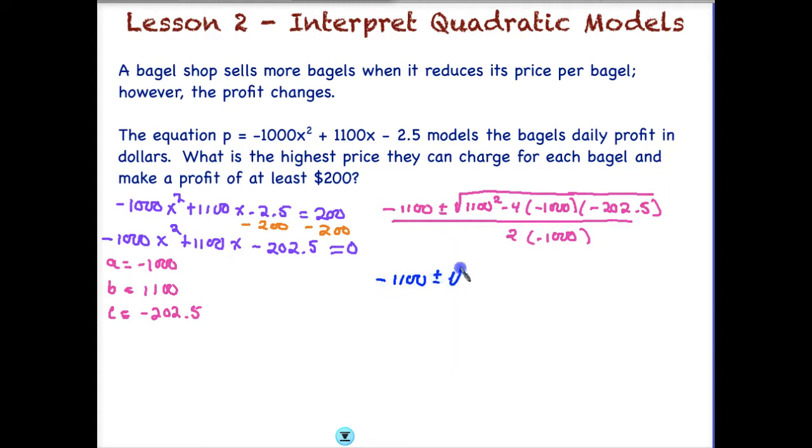So I am going to take a shortcut since I did this in advance. Remember that you would square the 1,100 first, you would write your minus sign, and then you would multiply 4 times 1,000 times 202.5, and then subtract all that from whatever 1,100 squared is. And when I did that, I got 400,000 all over negative 2,000, 2 times negative 1,000. Then I would need to take the square root of 400,000, and that comes to 632.5, and again all divided by negative 2,000. Remember to always do the division as the very last step.